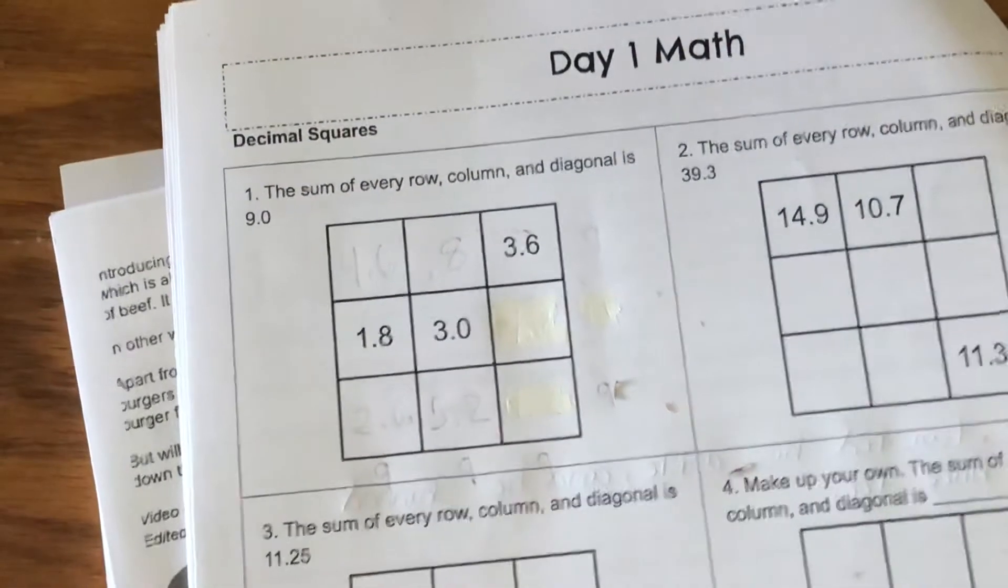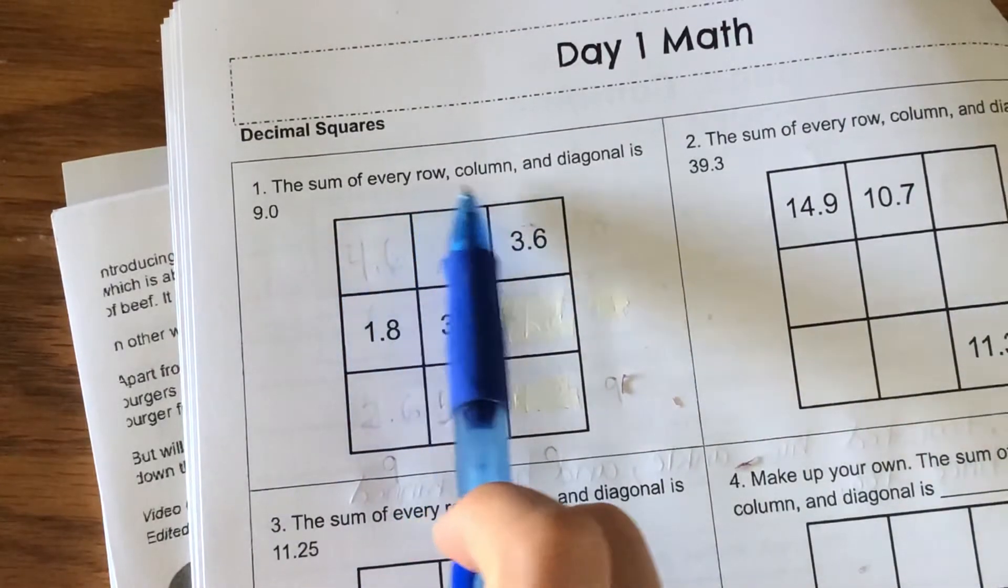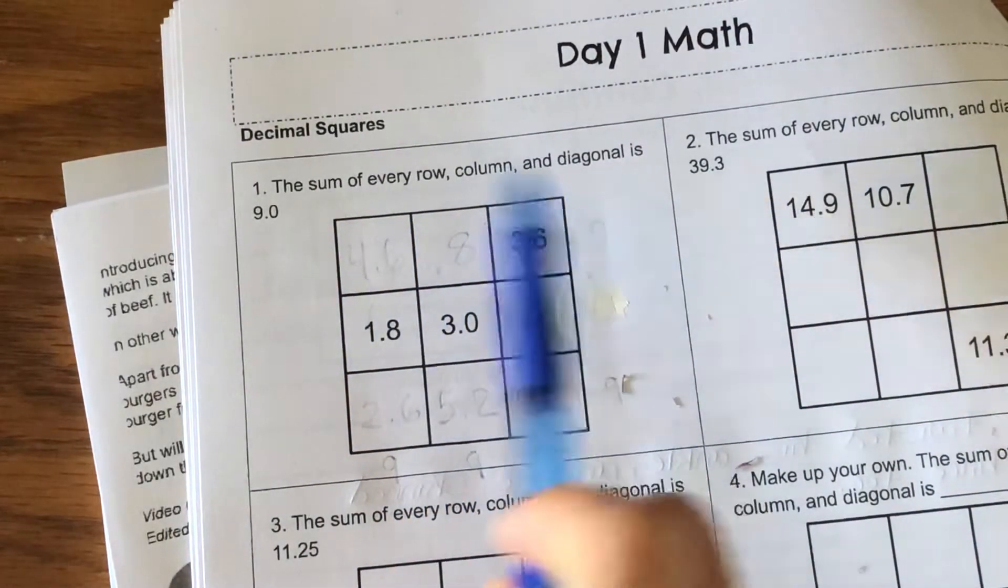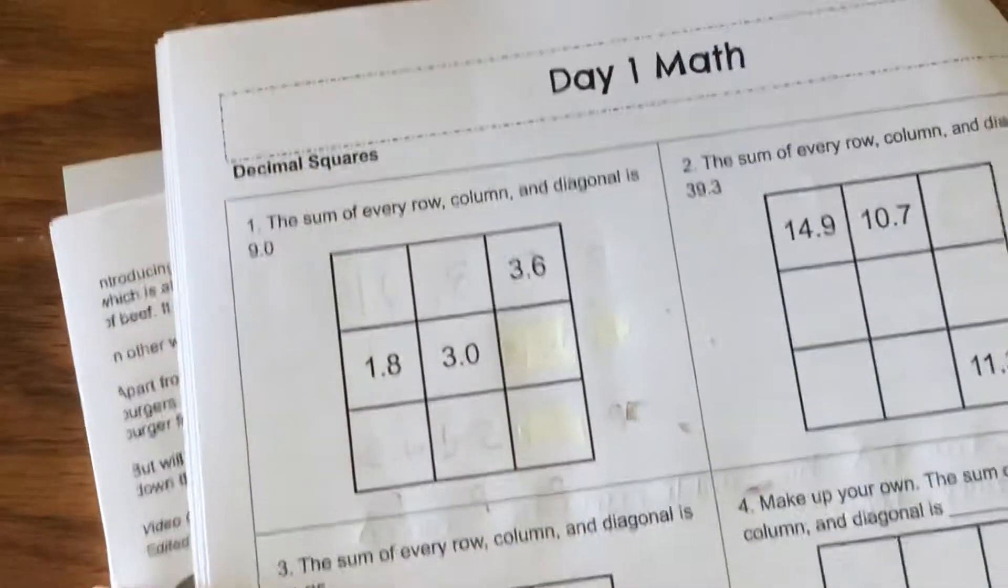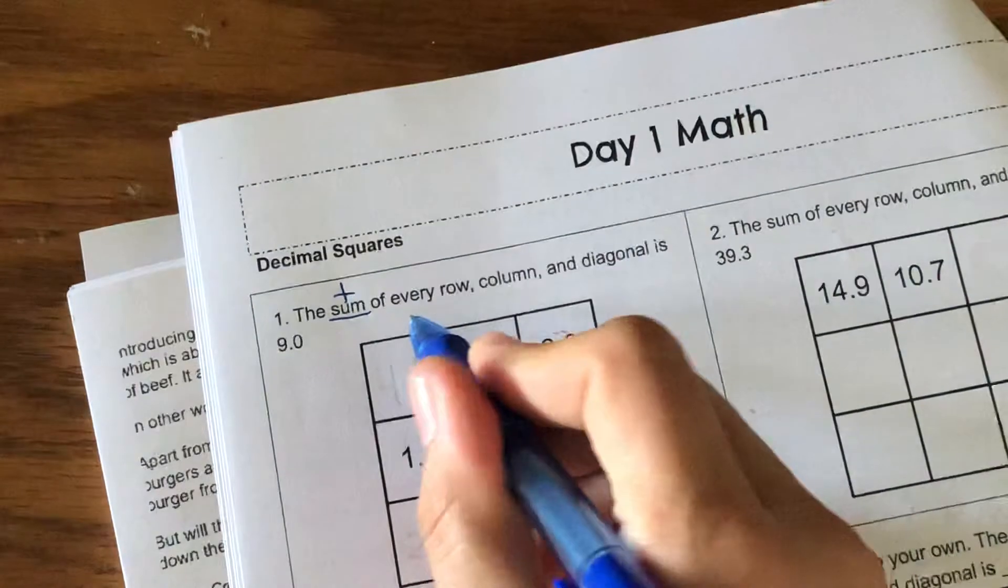Question one says the sum of every row, column, and diagonal is nine. I'm gonna go ahead and annotate that. So it's the sum—sum means addition problem—of every row, column, and diagonal is nine.